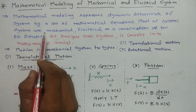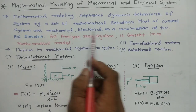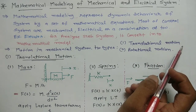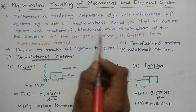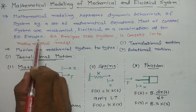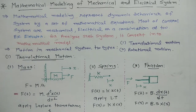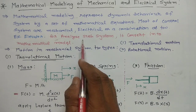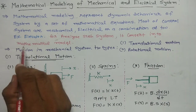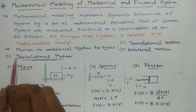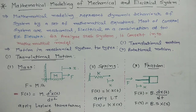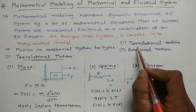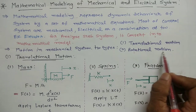Most control systems are mechanical, electrical, or a combination of the two. A mechanical system has some body, mass, and when we give supply it will work. Now, a mechanical system has two types of motion: translational motion and rotational motion.